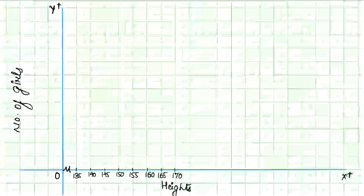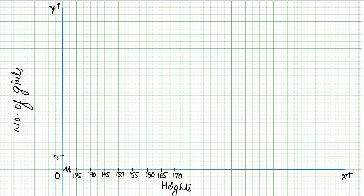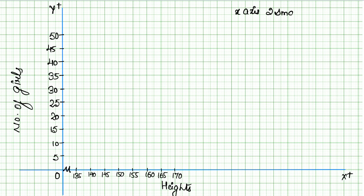The maximum number of girls is 50. Now on the X axis we take 2 boxes per unit for the height values, and on the Y axis we take 2 small divisions per unit for the number of girls. Now let's plot the points.